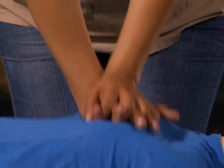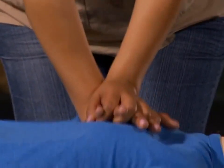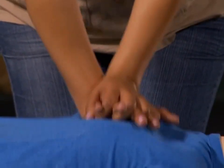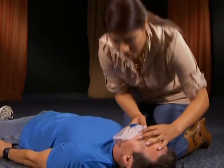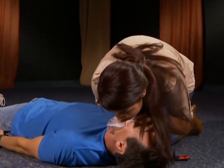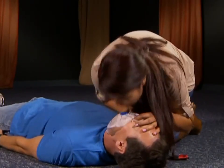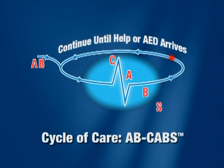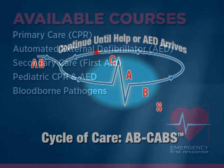After breathing for the patient, you continue to move through the cycle of care by returning back to chest compressions, opening the airway, and breathing for the patient. You continue with the cycle of care until professional help or an automated external defibrillator arrives.